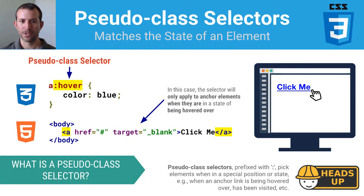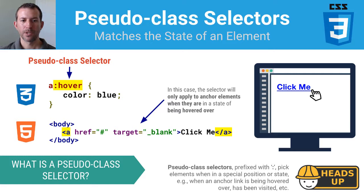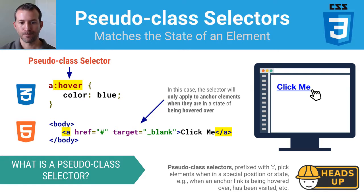Pseudo class selectors: many elements that you put on a page have different states. For example, if you have a hyperlink, when someone hovers over it, that's considered to be a distinct state, and you can style something based upon that state. If I want to style hyperlinks when someone is hovering over the text, I could use a pseudo class selector like this. In this case, when someone hovers over the text for the hyperlink, it will change the text color to blue. This is an example of a pseudo class selector.